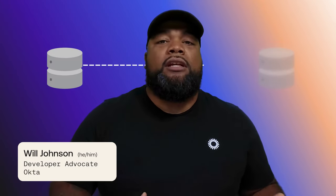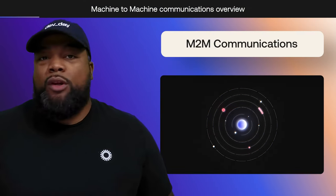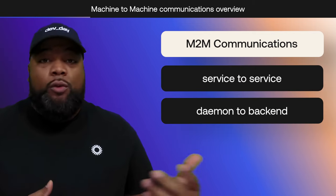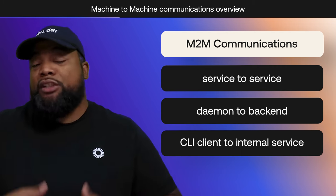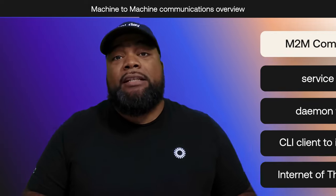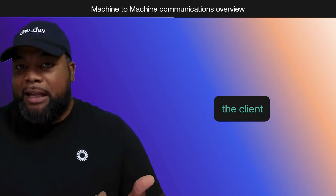Let's talk about machine-to-machine communications. There are many parts of a system where machine-to-machine communications make sense: a service-to-a-service, a daemon going to a backend, a CLI client communicating with an internal service, or even some Internet of Things tools. The key aspect of these communications relies on the fact that the element used to establish trust within this system is the client.